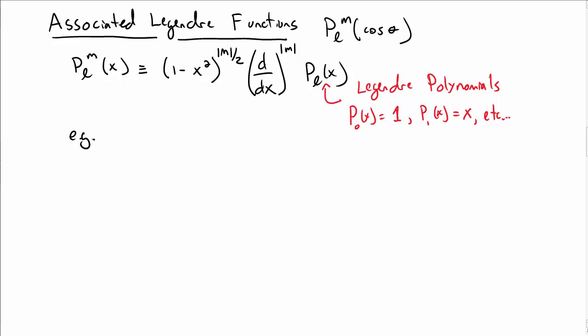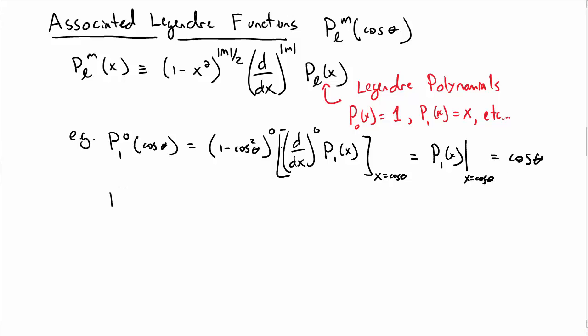So if you were to look at, for example, P_1^0 of cosine theta, what would that look like? That would be (1 - cos²θ)^0 times d/dx to the power 0 of P_1(x), where x is set to cosine theta. And then, well, that's just P_1 at x equal to cosine theta because there's no derivative, there's no first term, so it's just cosine theta.